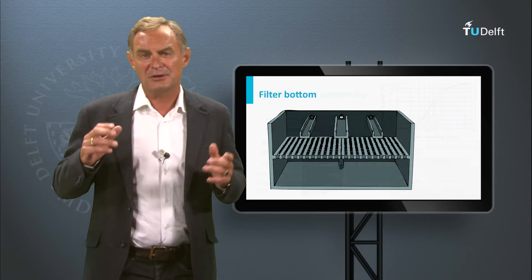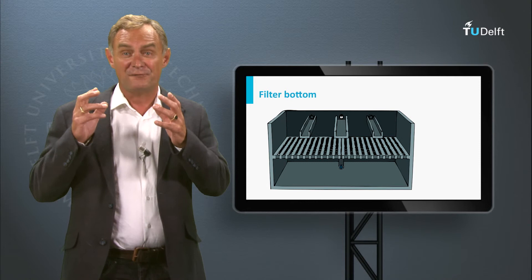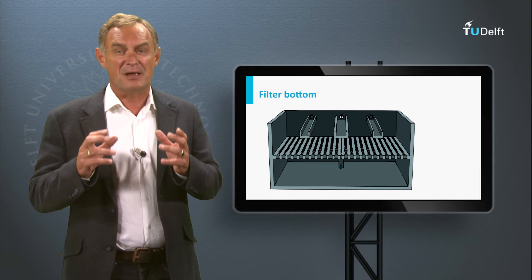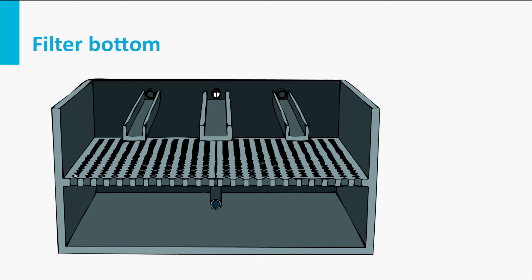Other important aspects of a well-designed filtration process are the piping, valves, and pumps to control the flow in the filter and to be able to perform maintenance and backwashing. The backwash water must be collected in separate gutters to drain it as quickly as possible to the backwash water treatment and discharge.